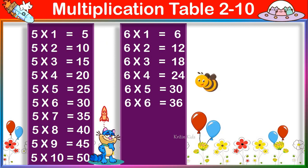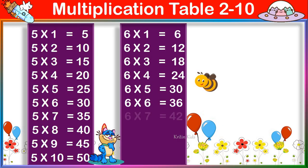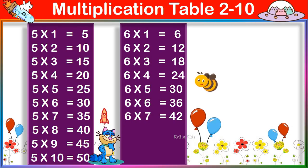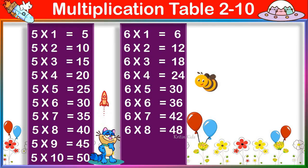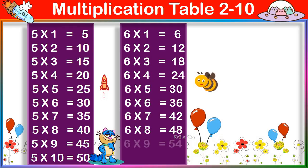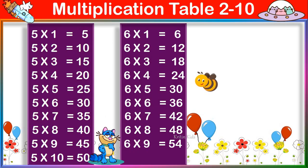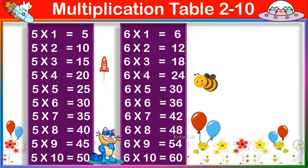6 six's are 36, 6 seven's are 42, 6 eight's are 48, 6 nine's are 54, 6 ten's are 60.